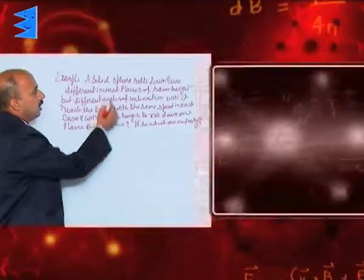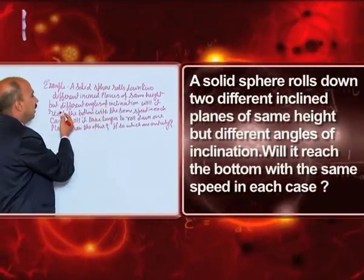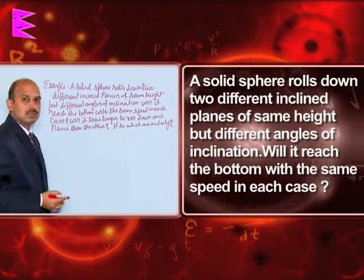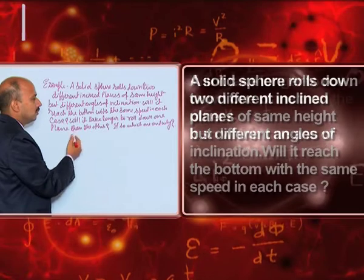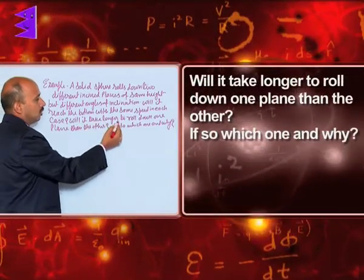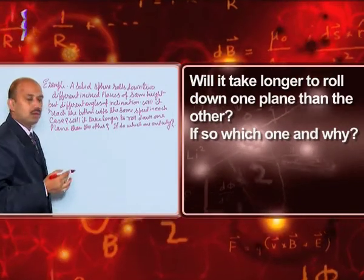Now, see in this example: a solid sphere rolls down two different inclined planes of same height but different angles of inclination. Will it reach the bottom with the same speed in each case? Will it take longer to roll down one plane than the other? If so, which one and why?